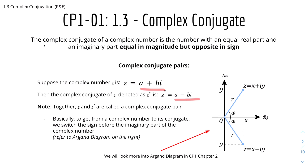You can see that the real part is the same — both a — but the imaginary part is opposite in sign: one is plus and one is minus. Together, z and z* are called a Complex Conjugate pair. To get from a complex number to its conjugate, we simply switch the sign before the imaginary part.